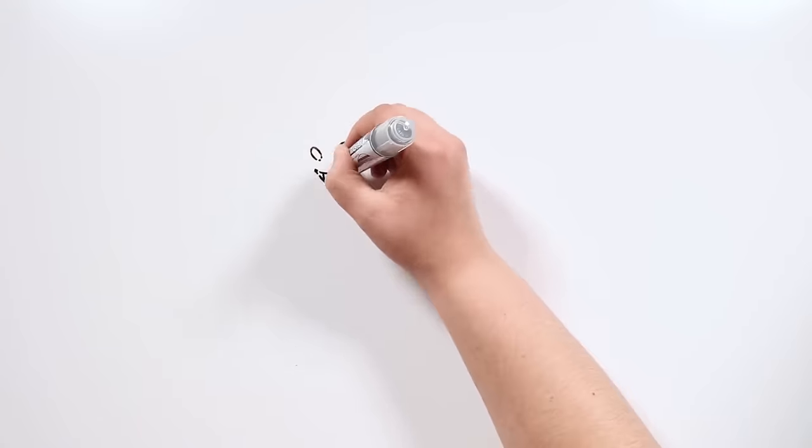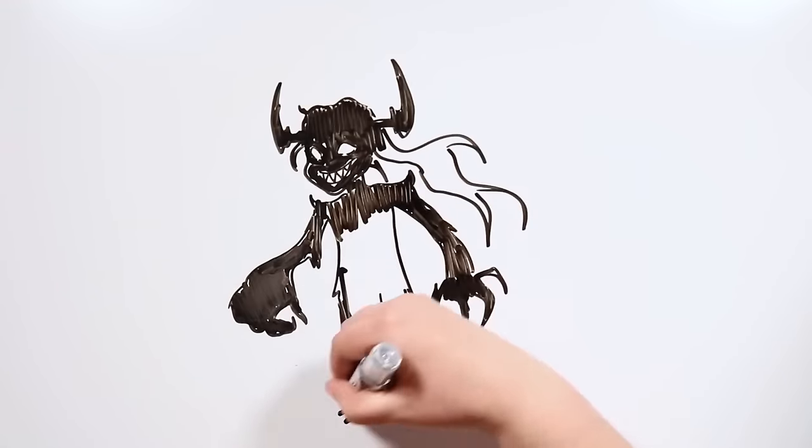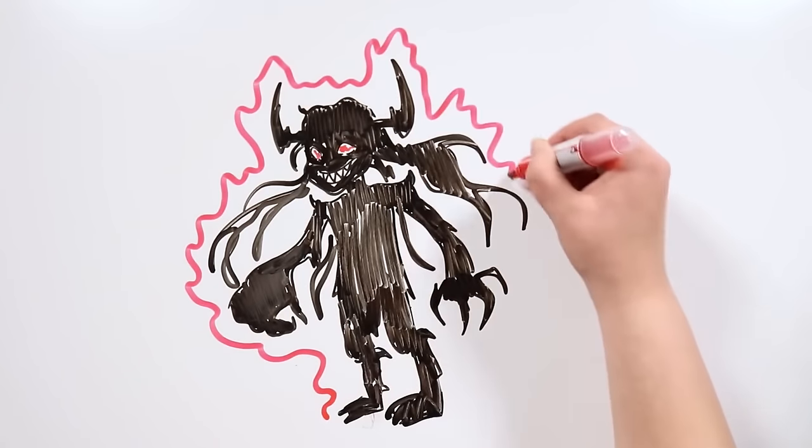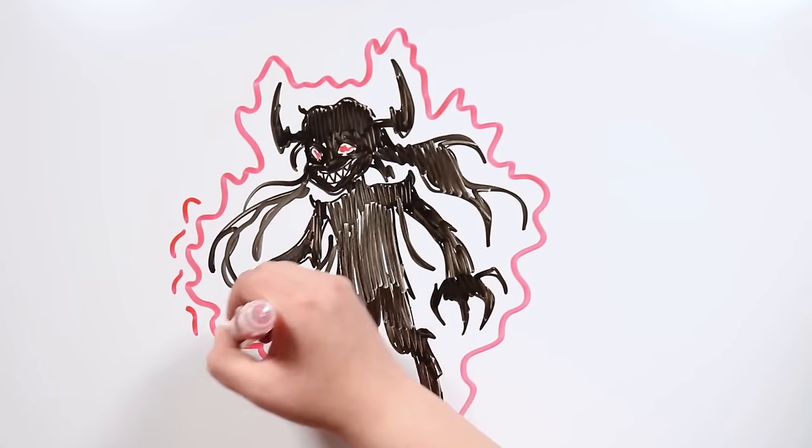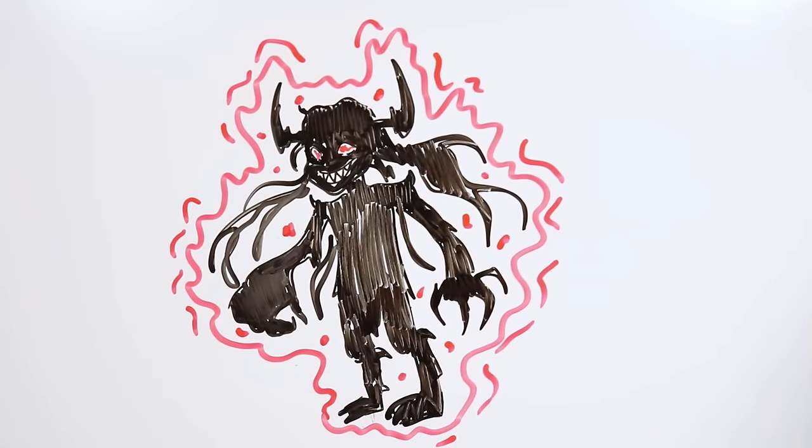She also has a third form, her Zalgoid form, which she has adopted in several occasions but nobody has seen. And this is fortunate, because that is her most violent and lethal form, where she displays her demonic essence in its purest form.